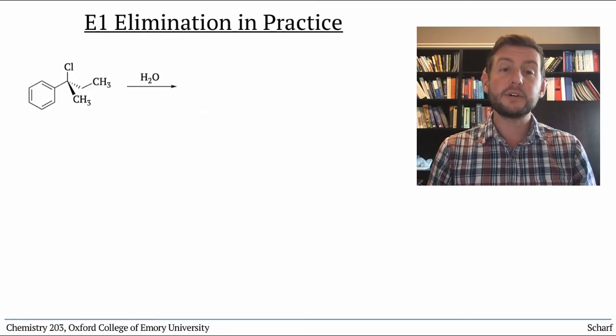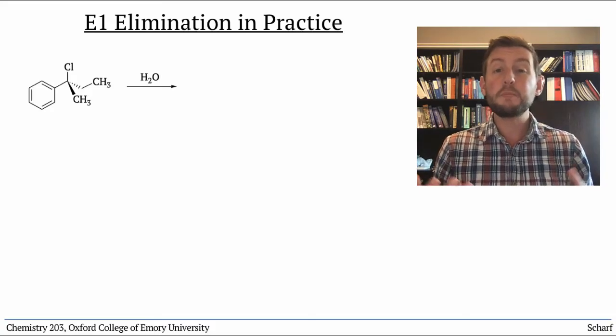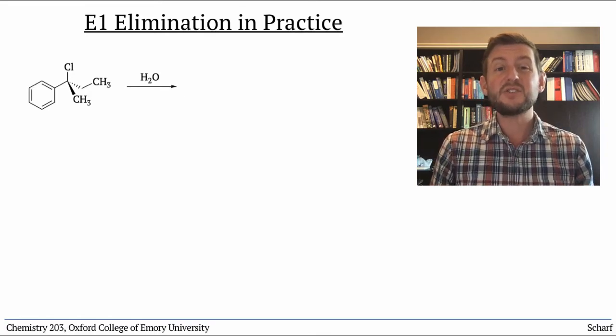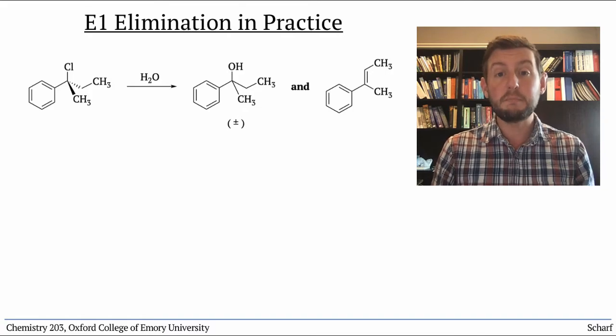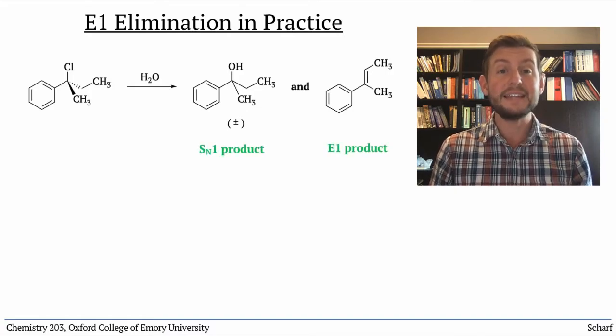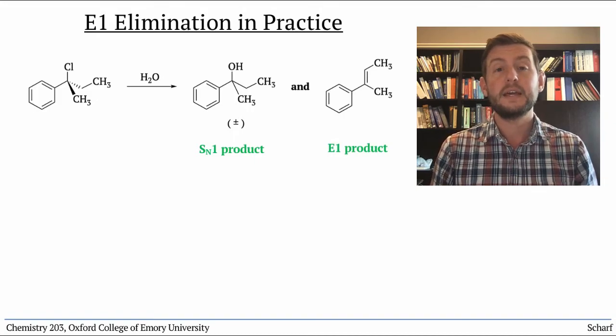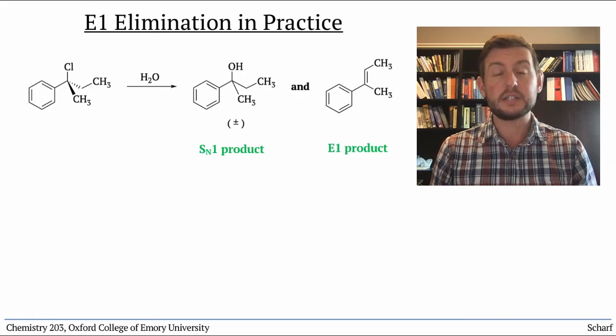In practical terms, since the E1 and SN1 reactions are both possible fates of carbocation, the two reactions are often in competition. You may see the products of both substitution and elimination within the same reaction flask. However, there's one circumstance in which we just see elimination.